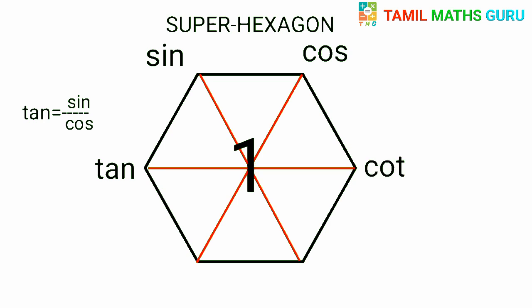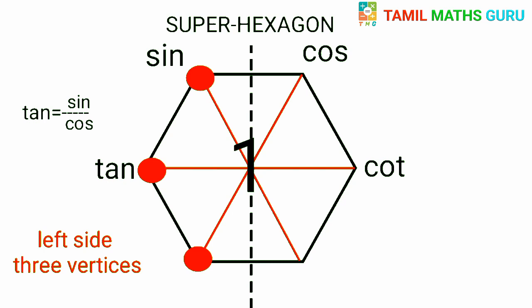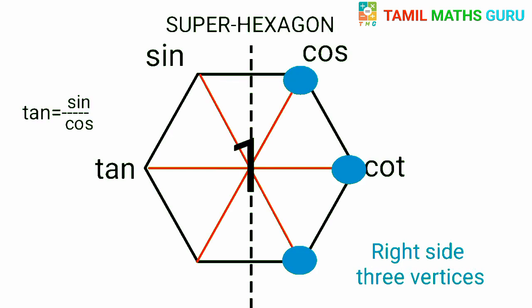We divide the hexagon into two parts: the left side has three vertices and the right side has three vertices.